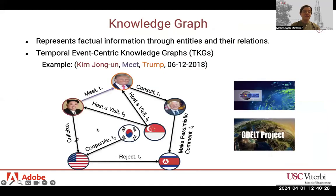Knowledge Graphs represent facts as tuples including a subject entity connected to an object entity through a relation. In the case of Temporal Event-Centric Knowledge Graphs, these tuples also incorporate a timestamp indicating the specific time that the event occurred. GDELT and ICEWS are two popular temporal knowledge graphs.